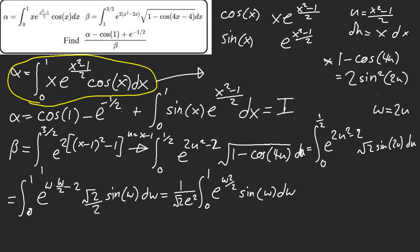This is exactly what we have here. So alpha over beta equals one over e — one over root e. And then this is... one over root two · e². So my answer is root two · e² over root e.